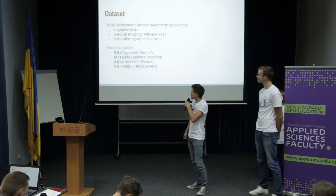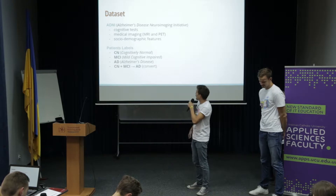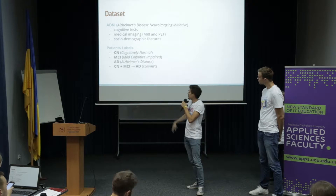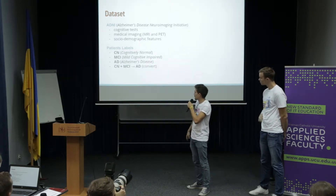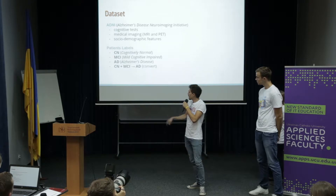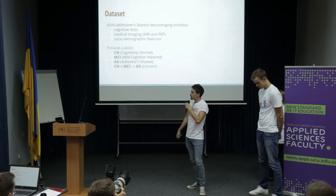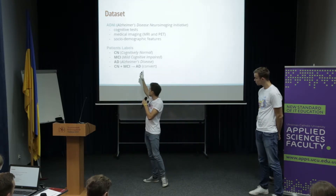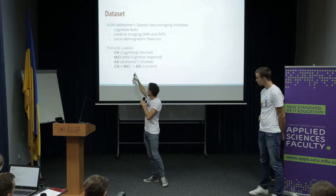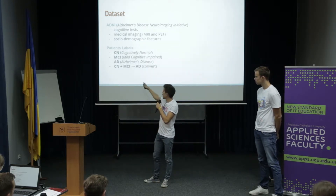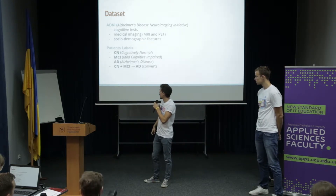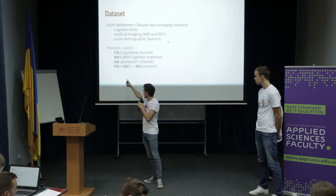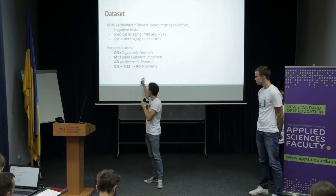We use a public dataset, ADNI, which includes many tests: cognitive tests, medical imaging, and sociodemographic features. For training our algorithms and prediction, we use these labels. The first is for healthy patients, the second is the middle stage, the third is when they have the disease, and the last is a transition from the healthy or middle stage to the disease.